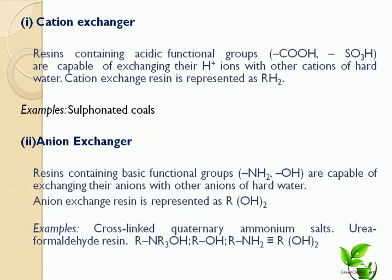Examples of cationic resins include sulfonated coals. Anionic exchange resins contain basic functional groups like NH₂ or hydroxyl (OH) groups, capable of exchanging their anions with other anions of hard water. Anionic exchange resins are represented as R(OH)₂. Examples include cross-linked quaternary ammonium salt and urea-formaldehyde resin.